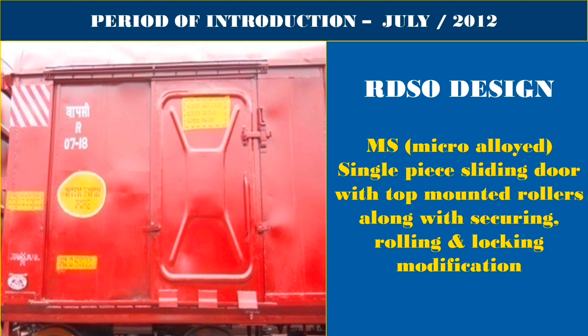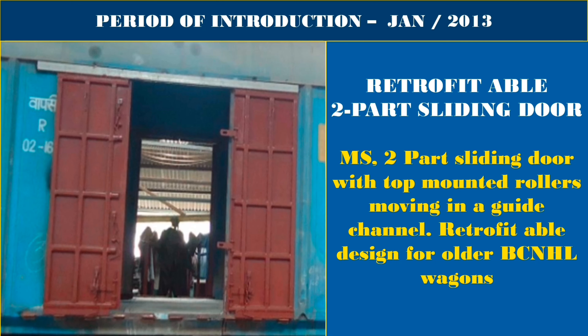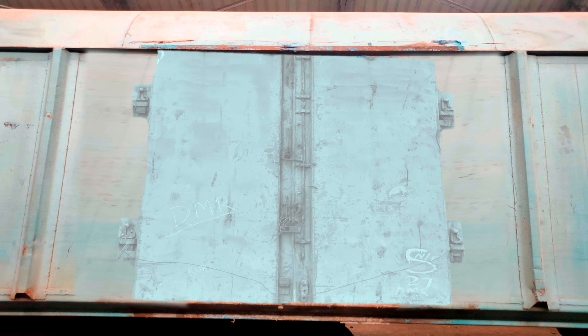This image is of the RDSO Design micro-alloyed single piece sliding door with top mounted rollers, along with securing, rolling, locking, and locking modification, introduced in July 2012. The retrofitable 2-path sliding door is an MS 2-path sliding door with top mounted rollers moving in a guide channel — a retrofitable design for older BCN HL wagons, introduced in June 2013.